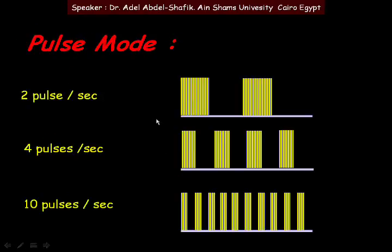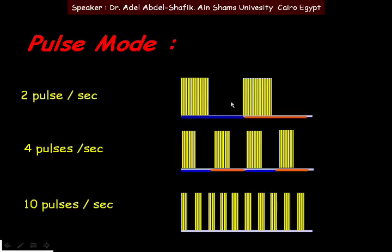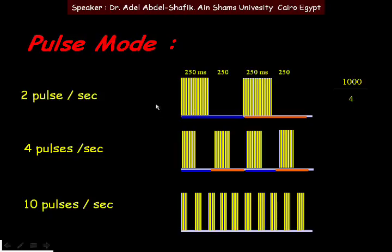Pulses can be adjusted for a certain number per second — for example, two, four, or ten pulses per second. At two pulses per second, we have two cycles in one second. Each cycle is divided into half on and half off, giving four intervals — two on and two off — each interval being 250 milliseconds.